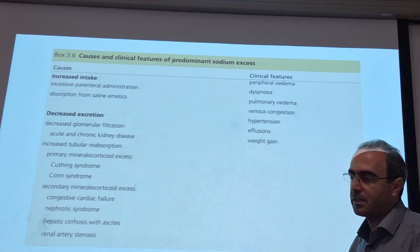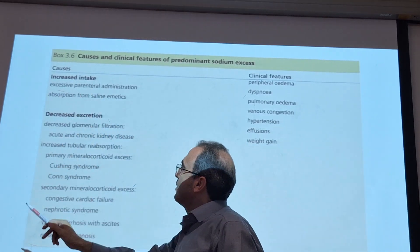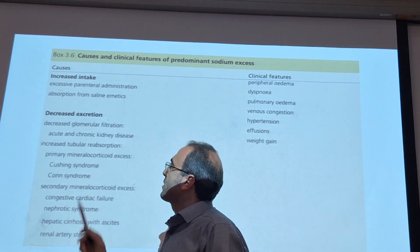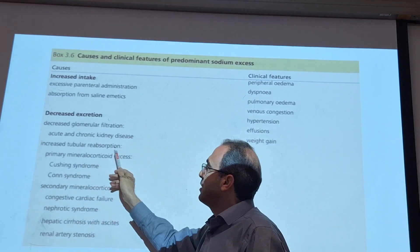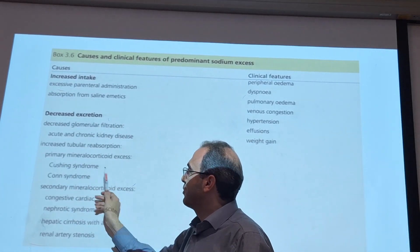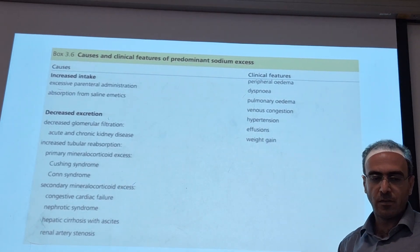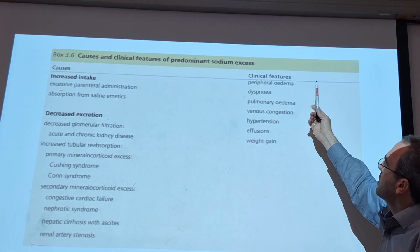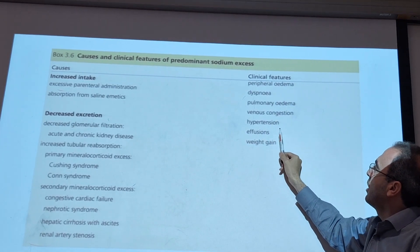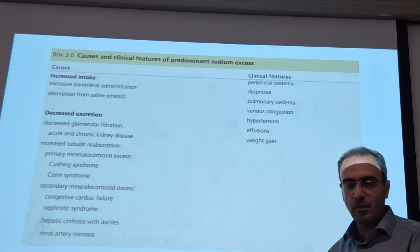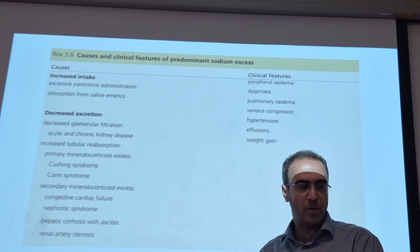The clinical features include venous congestion, hypertension, diffusion, and weight gain, which are the main symptoms of hypernatremia. Hyponatremia, on the other hand, is defined when sodium is less than 130 to 135, and above 141 is hypernatremia. Clinical signs and symptoms of hyponatremia include dehydration, drop in blood pressure, drowsiness — which means sleepiness — lethargy, confusion, abdominal cramp, oliguria, tremor, and coma. Hyponatremia is more dangerous.